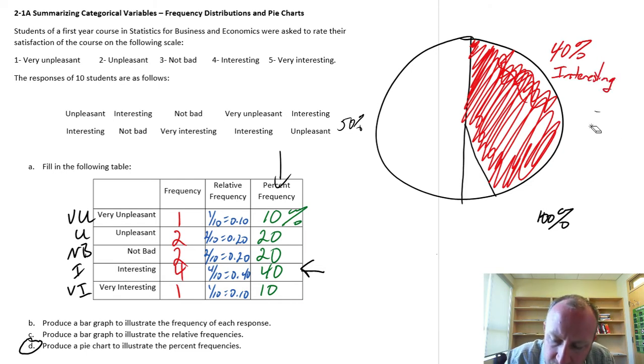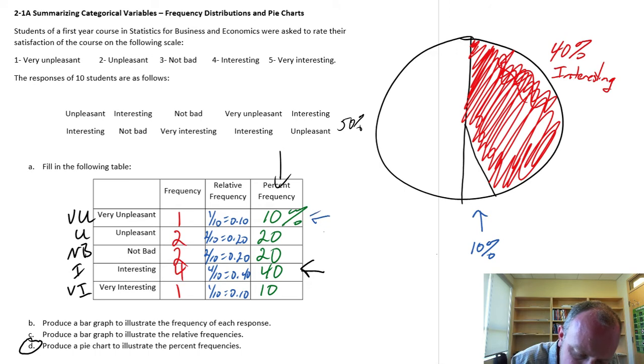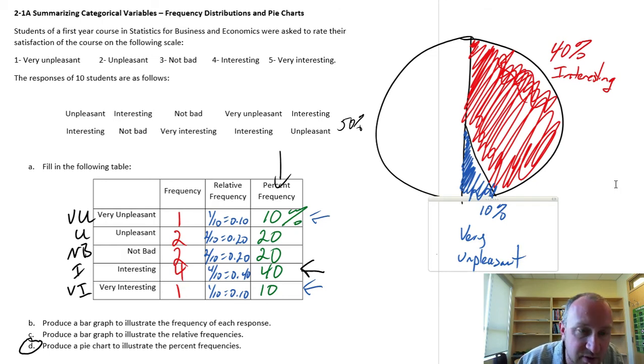Okay, now if that is 40 percent and I know that half of that circle is 50 percent, then it must mean that this little sliver that I have left down here, this must be 10 percent. And I just happen to have two values here for 10 percent, that one and this one. So I'll take advantage of that. So here's one of those 10 percent. Let's say that is very unpleasant, those who found it very unpleasant.